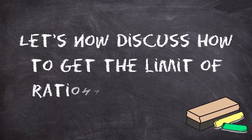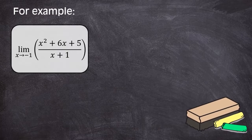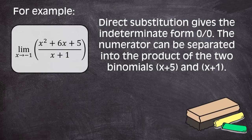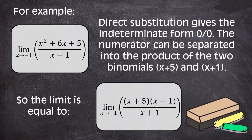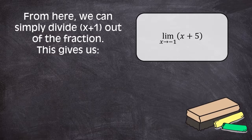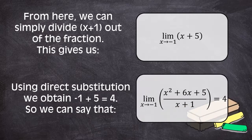Let's now discuss how to get the limits of rational functions. For example, the limit of the quantity of x squared plus 6x plus 5, all over x plus 1, as x approaches negative 1. For the solution, direct substitution gives an indeterminate form of 0 over 0. The numerator can be separated into the product of two binomials x plus 5 and x plus 1. So the limit is equivalent to the limit of the quantity of x plus 5 times x plus 1, all over x plus 1, as x approaches negative 1. From here, we can simply divide x plus 1 out of the fraction. This gives us the limit of x plus 5 as x approaches negative 1. The expression inside the limit is now linear, so the limit can be found by direct substitution. This obtains negative 1 plus 5 is equal to 4.